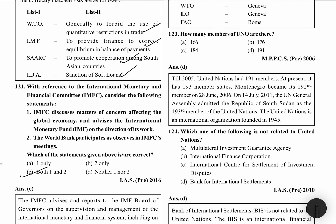How many members of UNO are there? When this question was asked, there were 191; now total is 193. The 192nd member is Montenegro, which joined in 2006. The 193rd member is South Sudan — the Republic of South Sudan is the 193rd member.